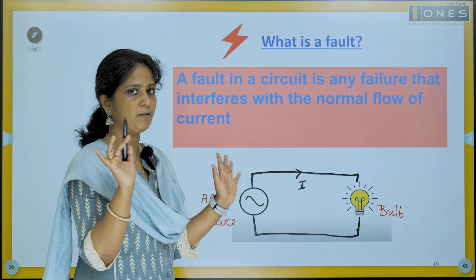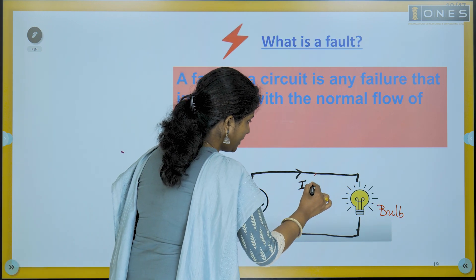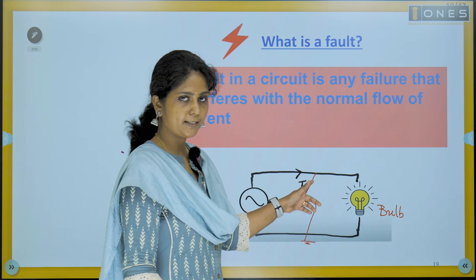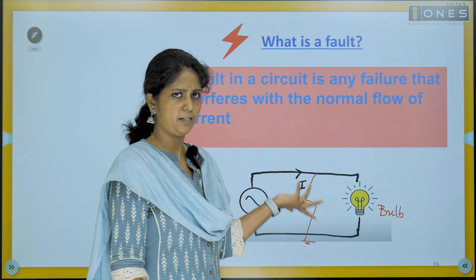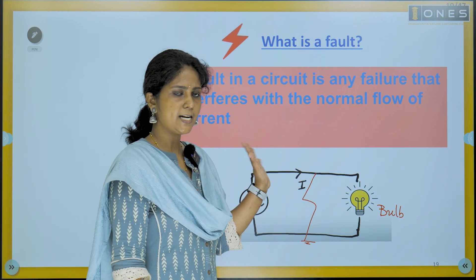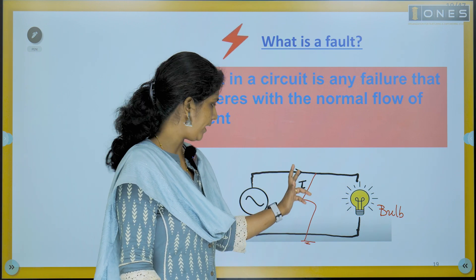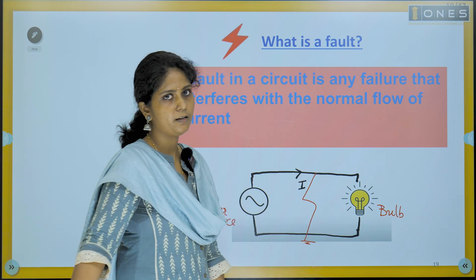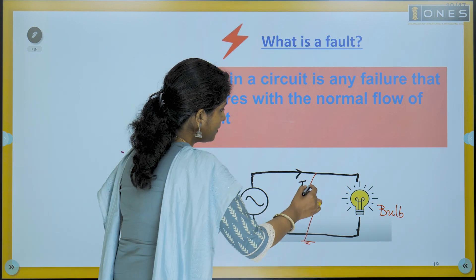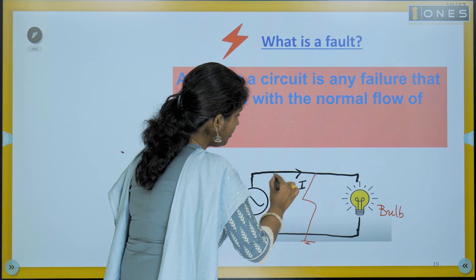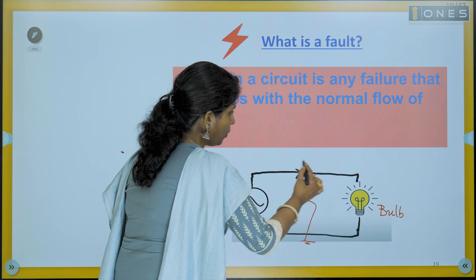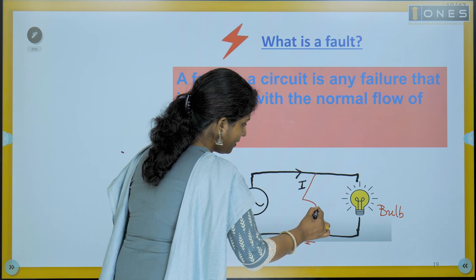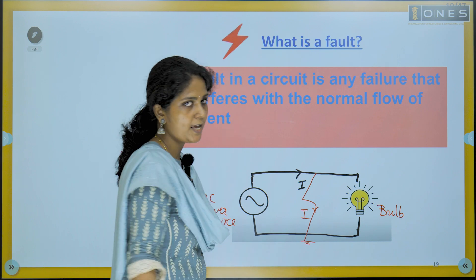Suppose in this case a live conductor comes in contact with the ground. This is due to insulation breakdown or some similar condition — a live conductor making contact with the ground. So here we have a low impedance path created, and the path of the current deviates from the normal flow path from the source to the load.